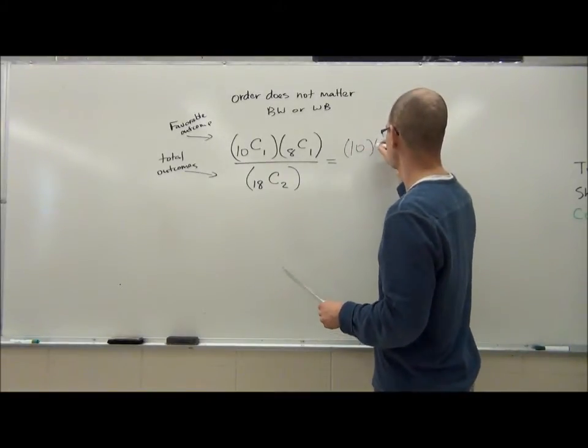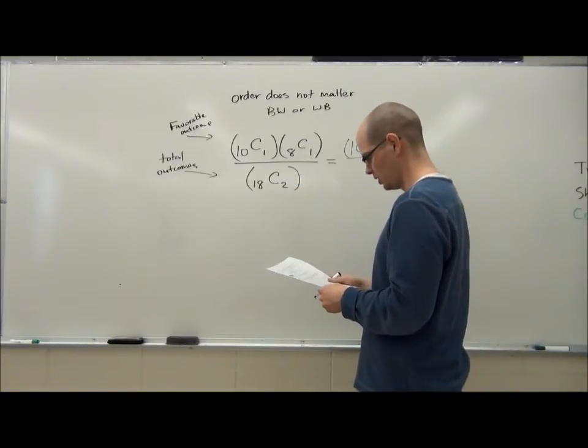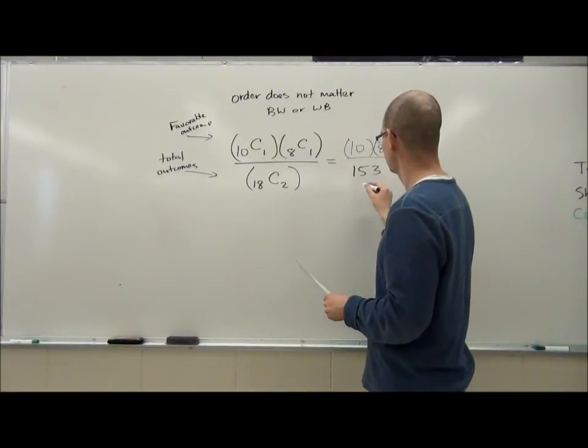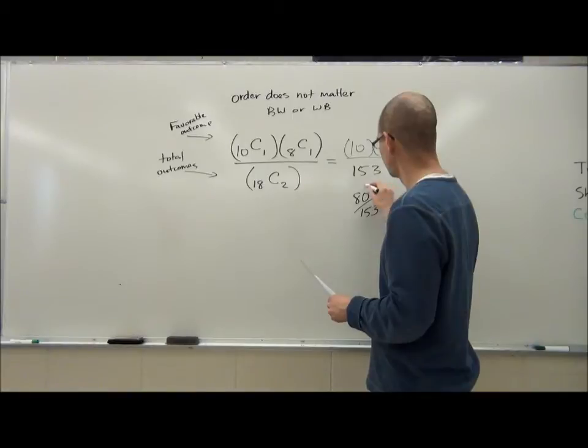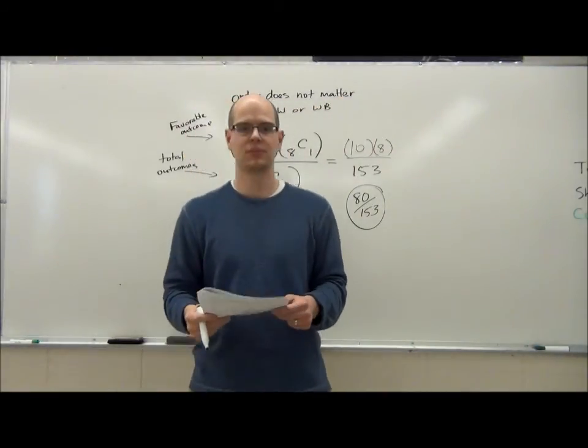10C1 is just 10, and 8C1 is just 8, and then the denominator 18C2 comes up to 153. So in lowest terms here, our answer is going to be 80 over 153 is the probability of getting a white or a black in either order.